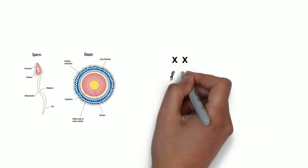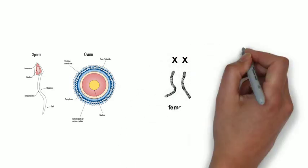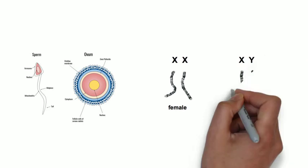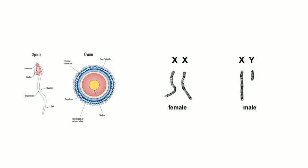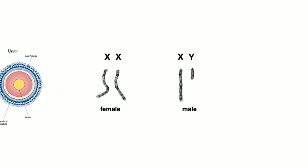The sex of the child is determined by the sex chromosome of the sperm at the moment of fertilization. A male has an X chromosome and a Y chromosome (XY), while a female has two X chromosomes (XX).